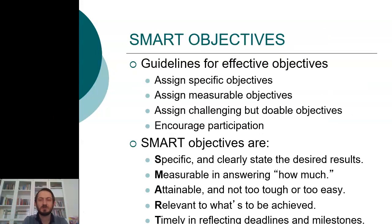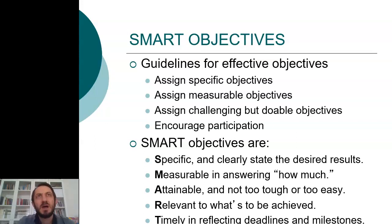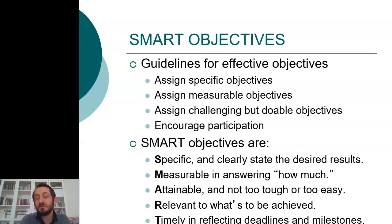What do we mean by SMART objectives? Firstly, it should be specific. You cannot simply say 'I want to be successful.' You want to be successful specifically on what? It should also be measurable. You cannot simply say 'I want to be successful from this course, the HRM course.' It is specific, but your success should also be measurable — your grade, for example.